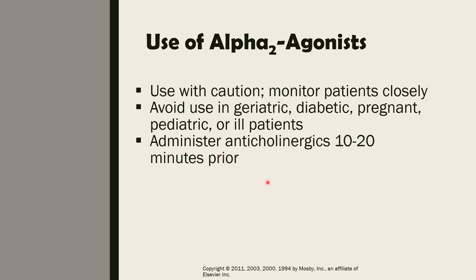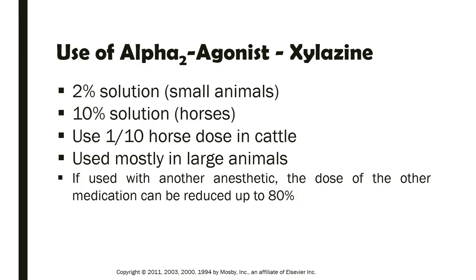The anticholinergic drug will raise the heart rate and blood pressure. For silocene, it is usually used in larger animals, but we also have preparations for small animals. It is available in a 2% solution. For horses, it is available in a 10% solution, and we should use one-tenth of the horse dose in cattle because cattle are extremely sensitive to the effects of silocene. If used with another anesthetic, the dose of the other medication can be reduced up to 80%.